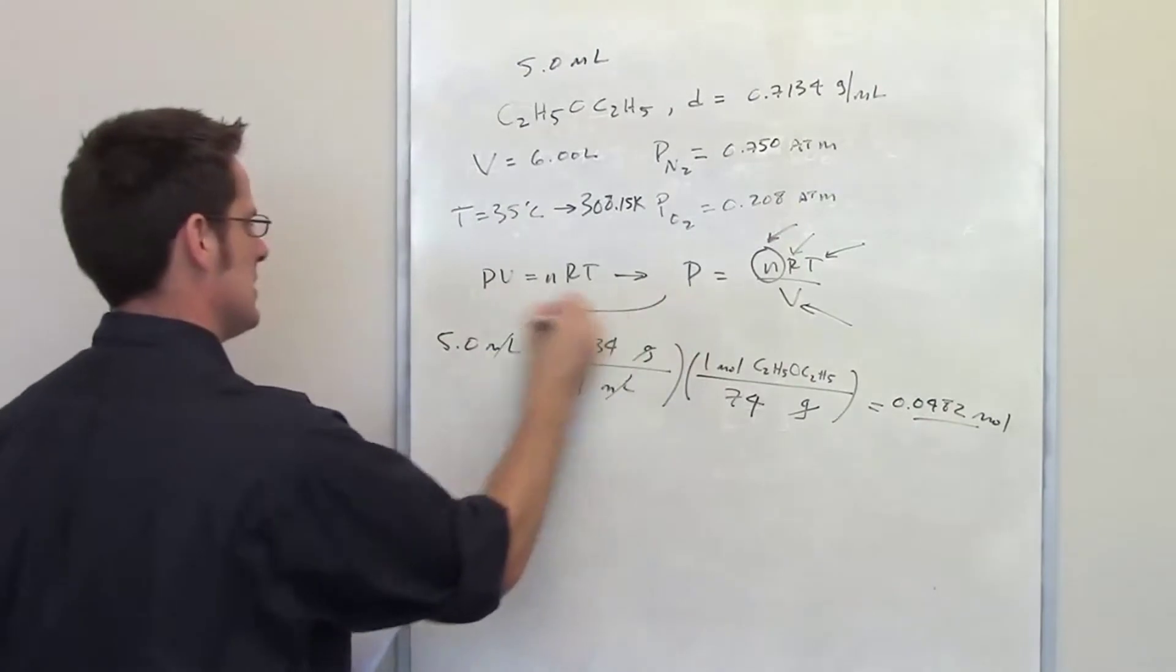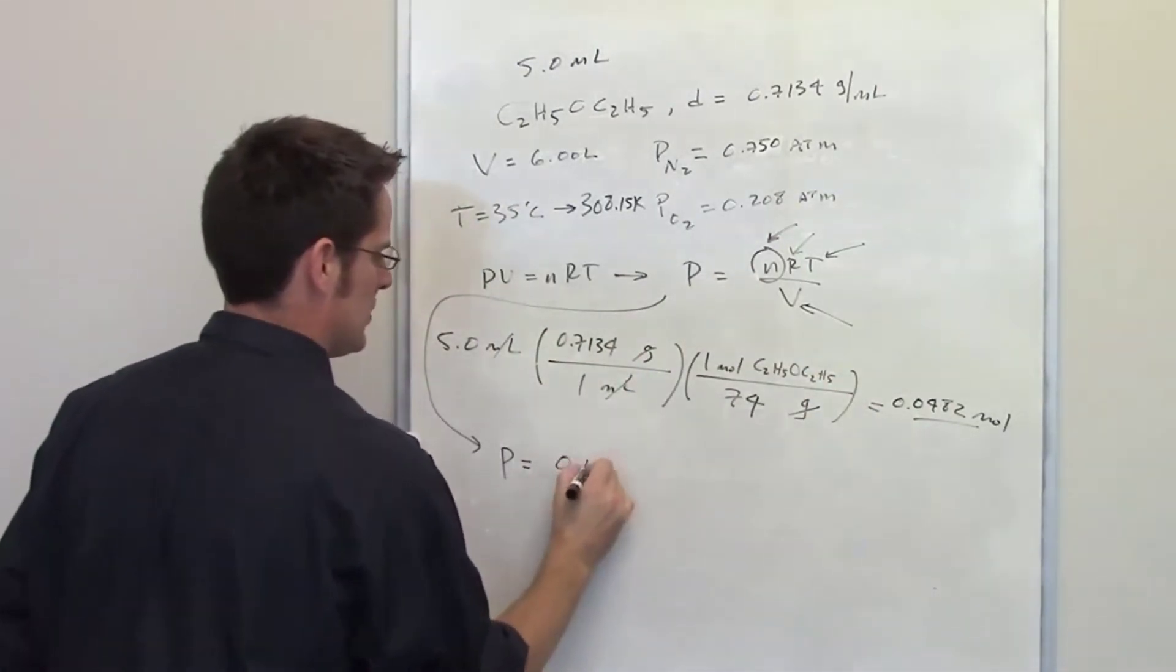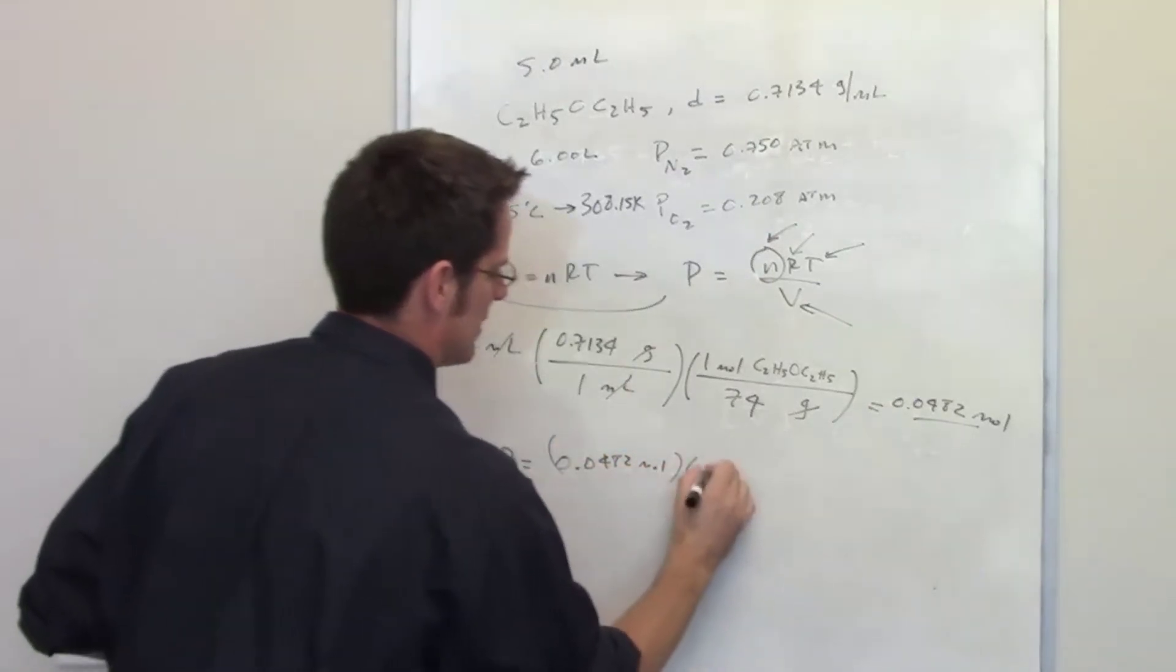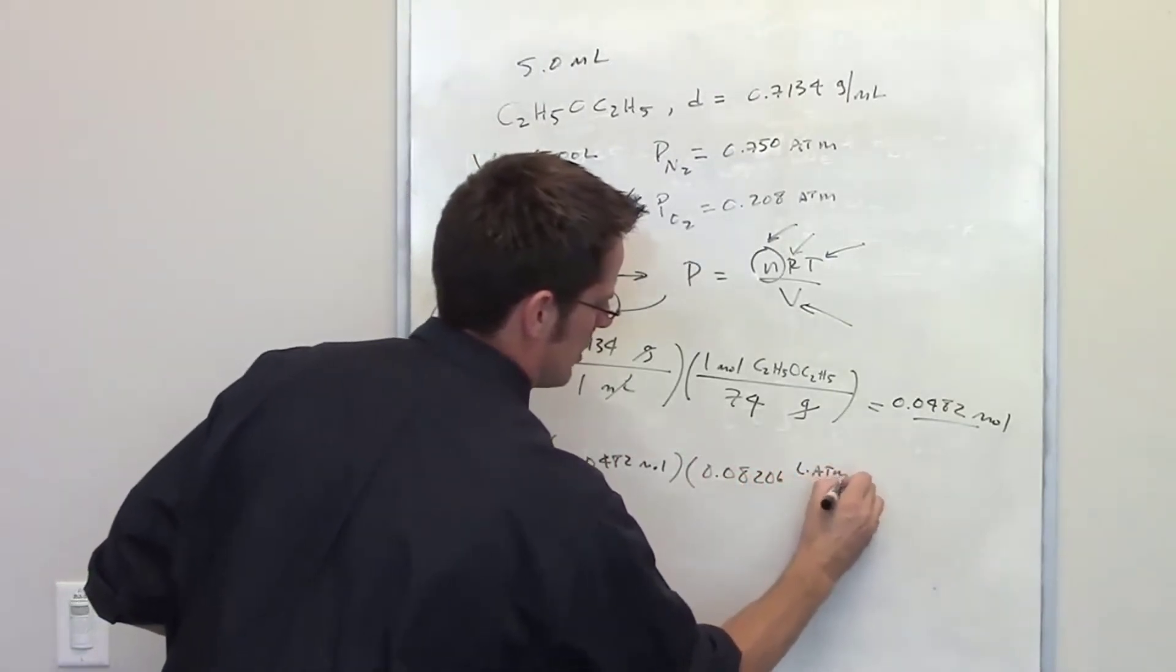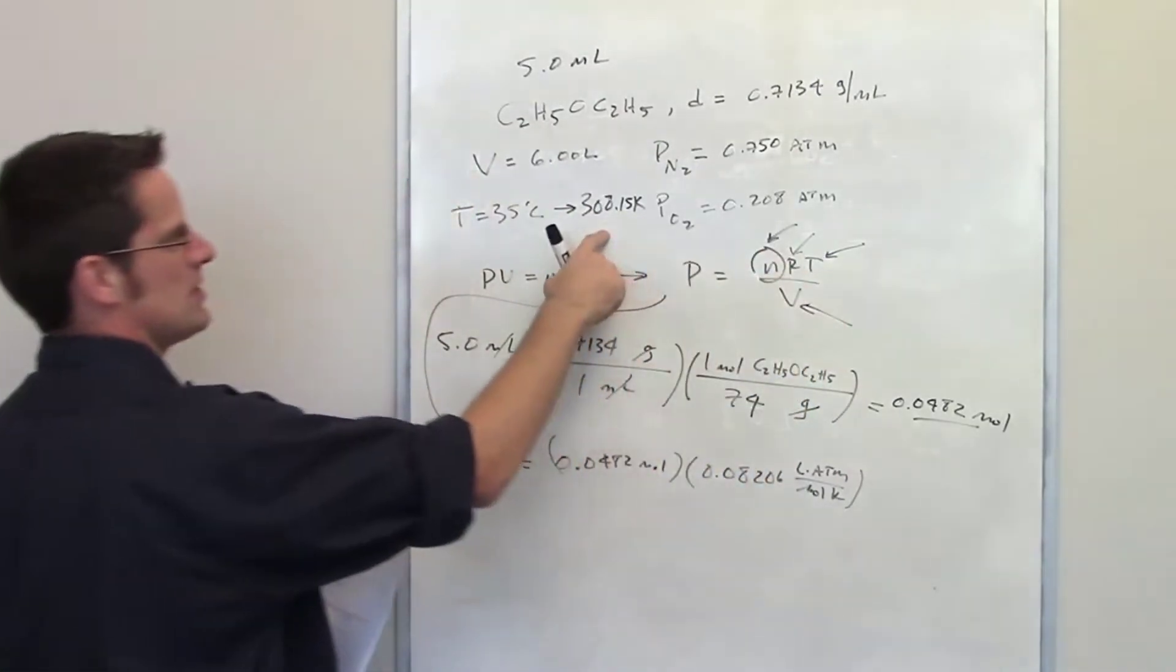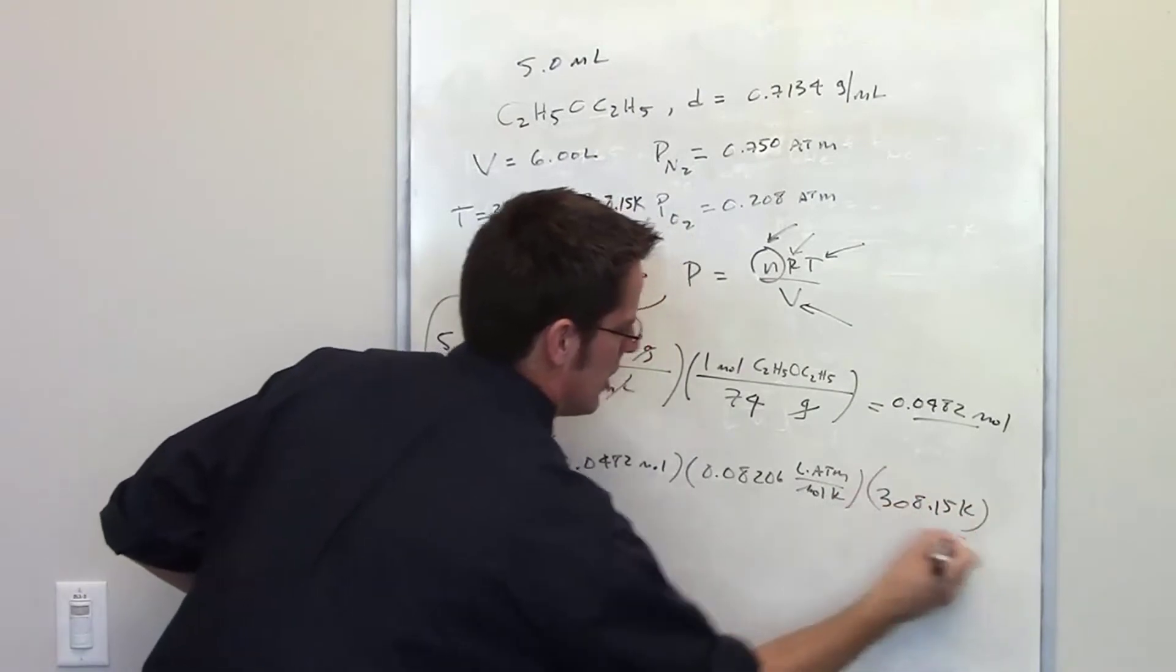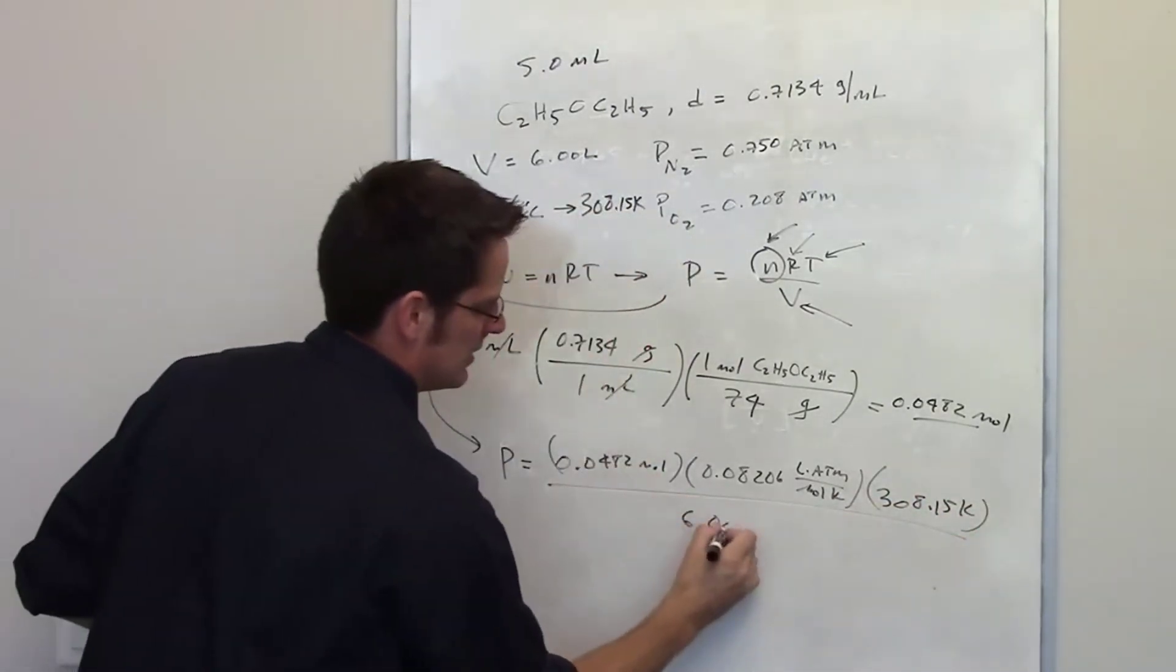Now all I have to do is come down here and calculate p. Pressure is going to be equal to n which is 0.0482 moles multiplied by the ideal gas constant which is 0.08206 liter atmospheres per mole kelvin multiplied by the temperature which is in kelvins 308.15. That is all divided by volume which the volume of the chamber is 6 liters.